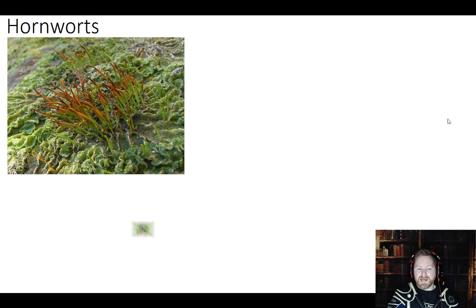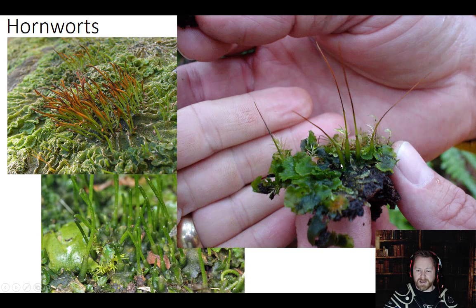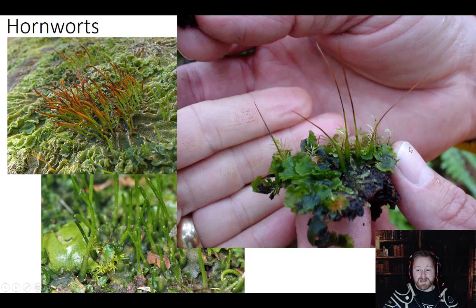Now hornworts. Similar to liverworts, but these have a prostrate piece that stands up. The gametophytes are on the bottom, and here are the sporophytes sticking up. At the tips, where it dries out, are little capsules that contain spores. Here are some still green ones — you can see the gametophytes on the bottom and the sporophytes sticking up. It's a great little plant, with all different types growing all over the world — definitely a non-vascular plant.